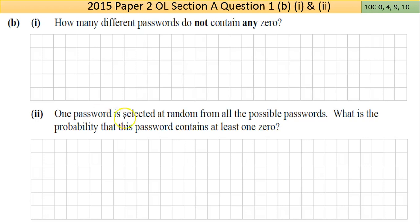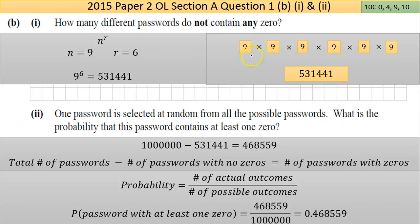Part b(i): How many passwords do not contain any zero? Well, if it can't contain a zero, in the first choice you only have nine choices because I can't choose zero. I still have to make a selection and a selection, so still multiply. But each time I can't make zero as a choice, so it becomes 9 × 9 × 9 × 9 × 9 × 9. Using the n to the power of r formula, I have nine choices I can make and I still have to make six choices, so it's 9 to the power of 6, which equals 531,441.